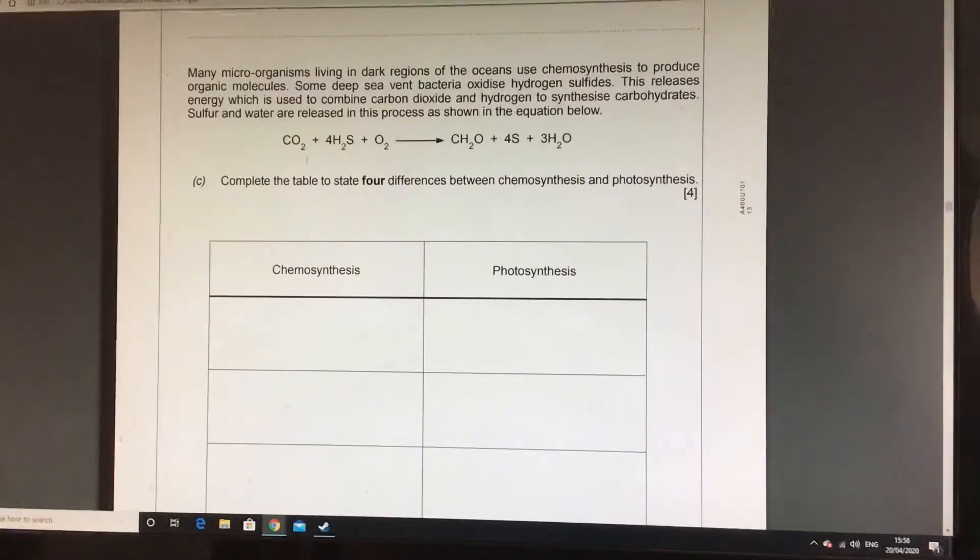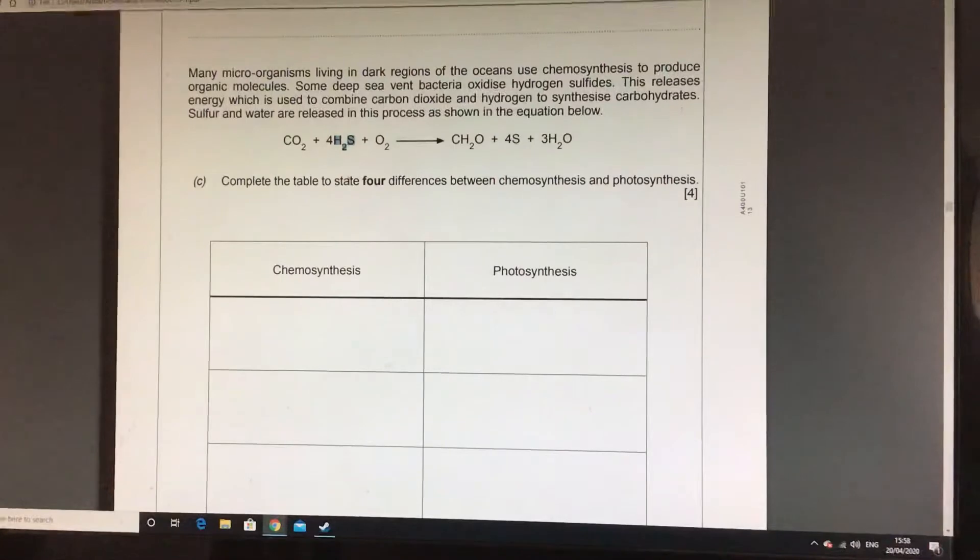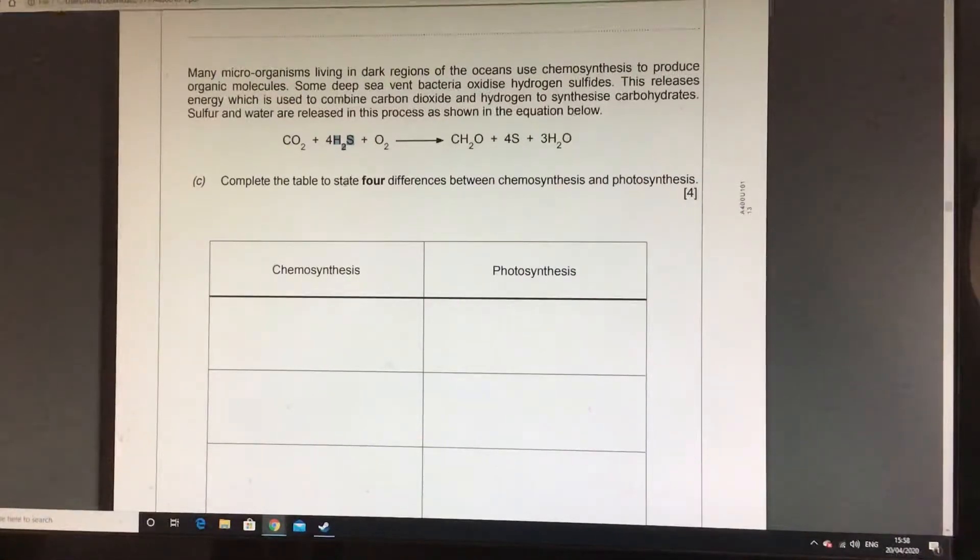Key differences that you'd need to see. They've got the hydrogen sulphide here, which clearly there isn't in photosynthesis. There's no hydrogen sulphide required. For photosynthesis, where does water feature? For photosynthesis, water is actually on the other side. It's a reactant, whereas here it's product. For both of them,